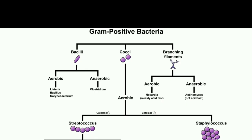Gram-positive bacteria can be differentiated into different types based on their shape, classified into three broad categories: bacilli, cocci, and branching filaments. Bacilli and branching filaments appear in both aerobic and anaerobic bacteria — for example, Bacillus (aerobic) and Clostridium (anaerobic). Cocci are always aerobic, with examples including Staphylococcus and Streptococcus. Branching filaments can be aerobic, such as Nocardia, or anaerobic, such as Actinomyces.